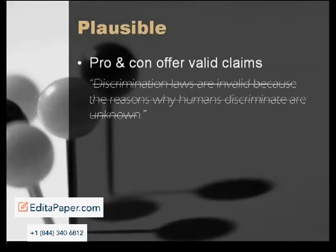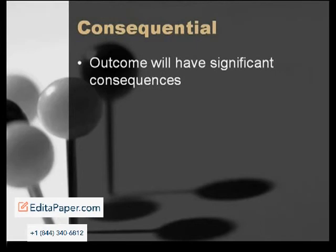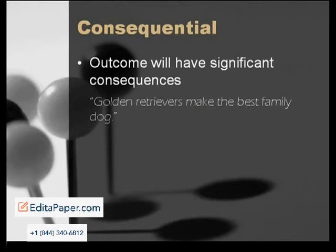Finally, although a topic may be debatable with solid, plausible reasoning, the outcome must be of consequence. For example, the topic golden retrievers make the best family dog is certainly debatable, and the arguments on both sides are strong — disposition, faithfulness, intelligence, etc. But in the end, after the debate is over, the consequences are not significant.